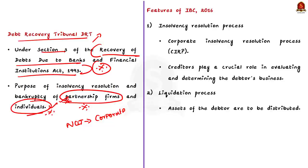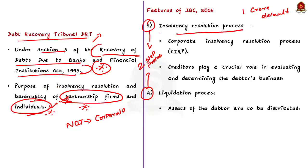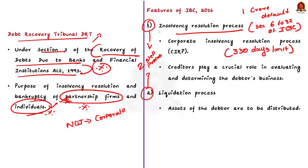Now let us move on to the features of the Insolvency and Bankruptcy Code. The major feature includes a two-step process for insolvency resolution for corporate debtors where the minimum amount of default is rupees one crore. The first step is the insolvency resolution process mentioned in Sections 6 to 32 of the IBC. The IBC provides a time-bound process for resolving insolvency of corporate debtors within 330 days. This resolution process is called the Corporate Insolvency Resolution Process, or CIRP.